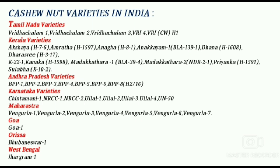Cashew nut varieties in India. Tamil Nadu varieties: Vriddhachalam 1, 2, 3, etc. Kerala varieties: Akshaya, Amruta, etc. Andhra Pradesh varieties: BPP 1, BPP 2, etc. Karnataka varieties: NRCC 1, NRCC 2, etc. Maharashtra varieties: Vengurla 1, Vengurla 2, etc. Goa: Goa 1. Orissa: Bhubaneswar 1. West Bengal: Jhargram 1. These are some of the varieties of cashew.